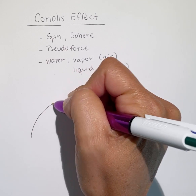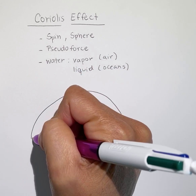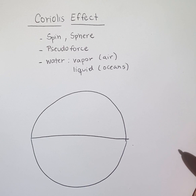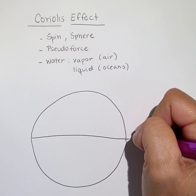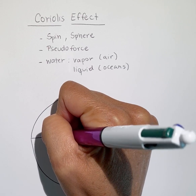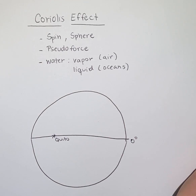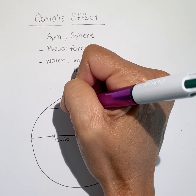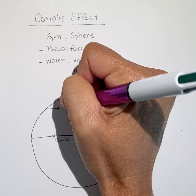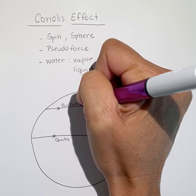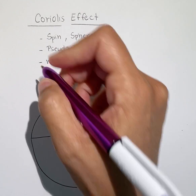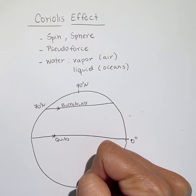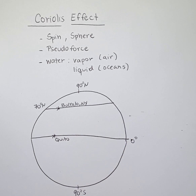Imagine a transparent Earth. Consider the position of two cities: Quito, at the equator — 0 degrees — and Buffalo, New York, situated at 47 degrees north.